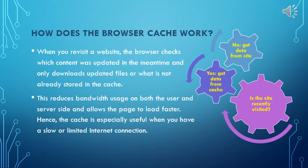So exactly how does this cache work? Well, when you revisit a website, the browser checks which content was updated in the meantime on the site, and only downloads updated files or what is not already stored and located in the cache. This reduces the bandwidth usage on both the user and the server side, and allows your pages to load a lot faster. So the cache is especially useful when you have a slower, limited internet connection, because it doesn't have to go out and download all of those same pages again.